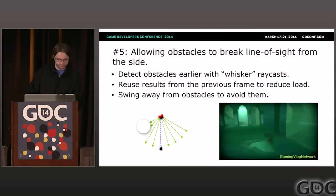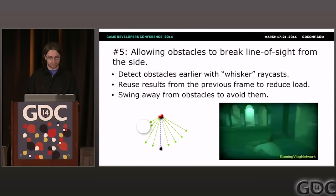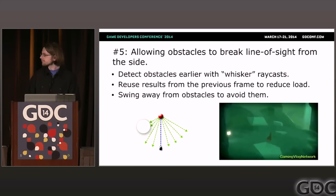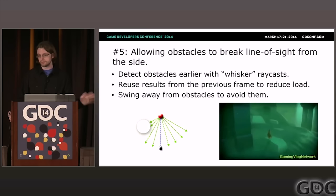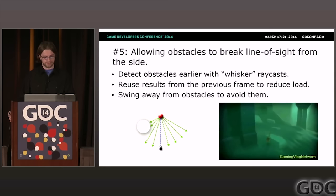You can detect obstacles early with ray casts I call whiskers — you can see the green arrows on the diagram. If any of those whiskers detect an obstacle, you can use that to preemptively swing away. And if necessary, you can reuse results from previous frames to reduce processor load.